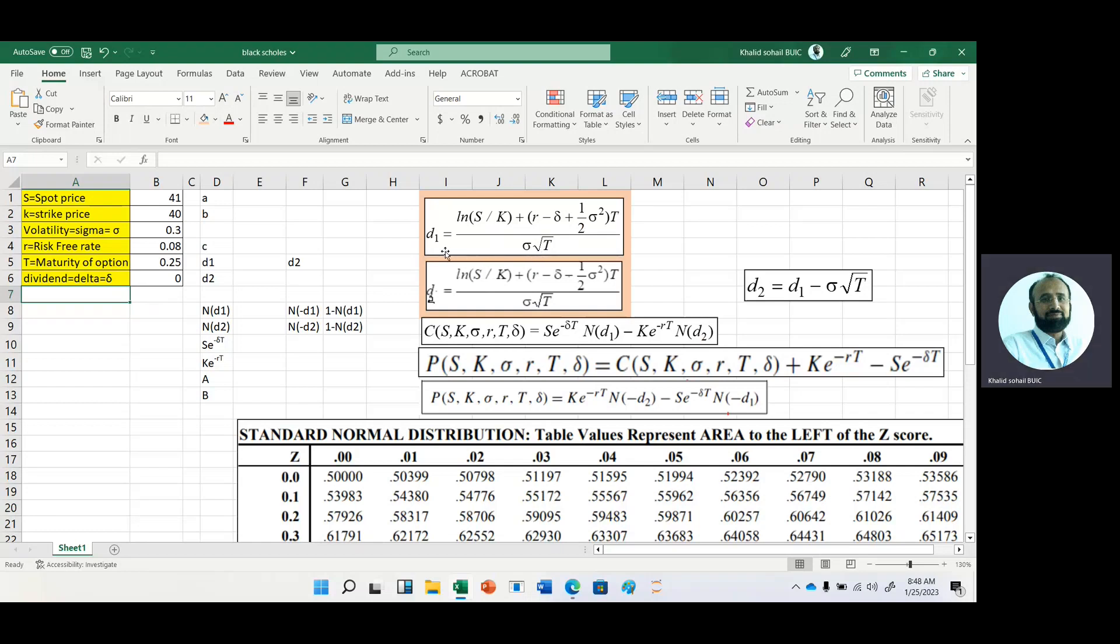After getting D1, we look at this value in the Z table, which we can get with the help of Excel function as well. In the same way, we calculate D2. In D2, the only difference is that here we have a plus sign, and here before one-half we have a minus sign. The rest of the formula is the same. We can also calculate D2 by putting the simple formula D1 minus sigma multiplied by square root of T.